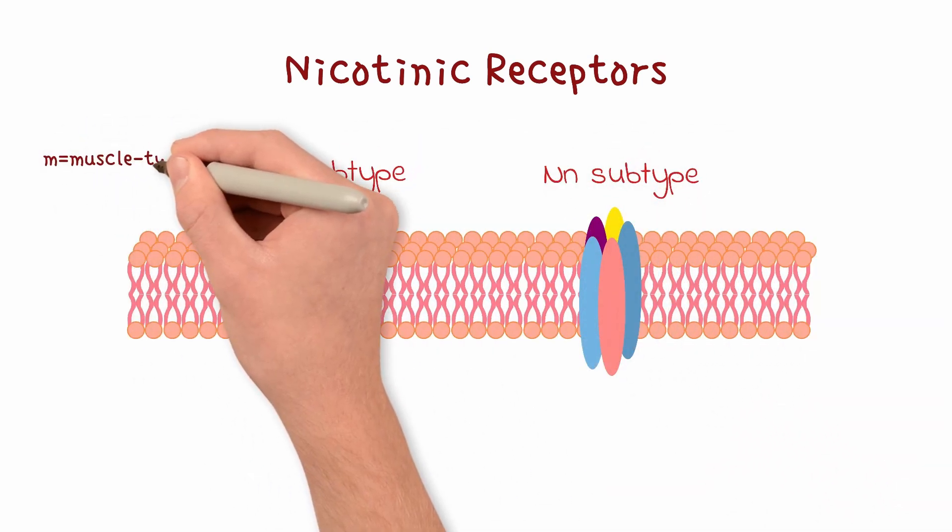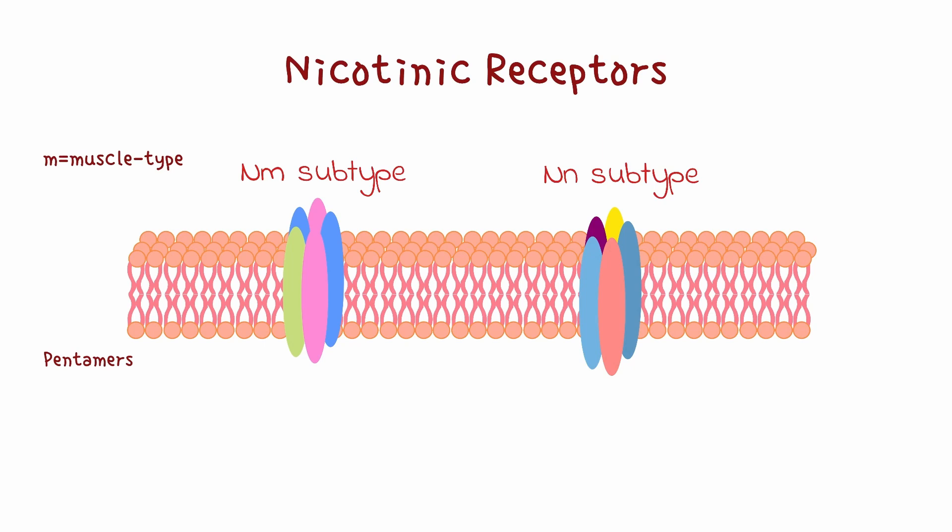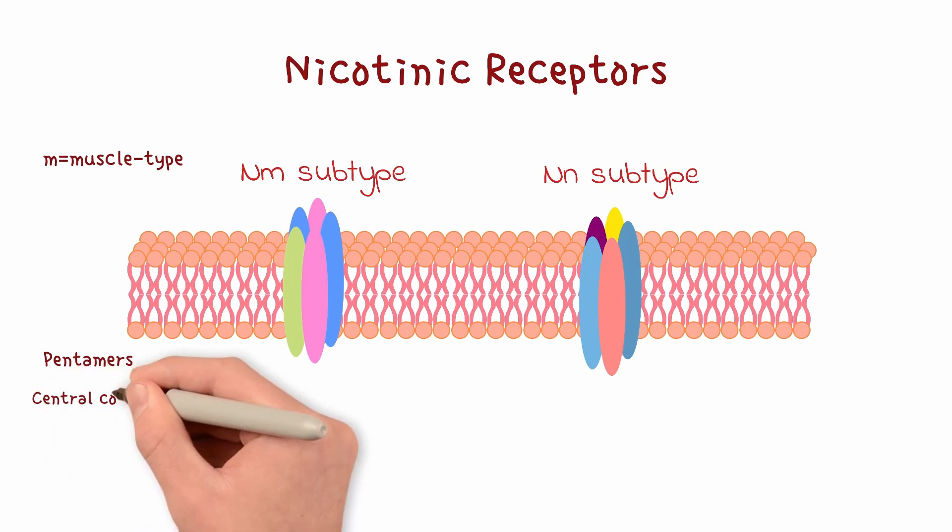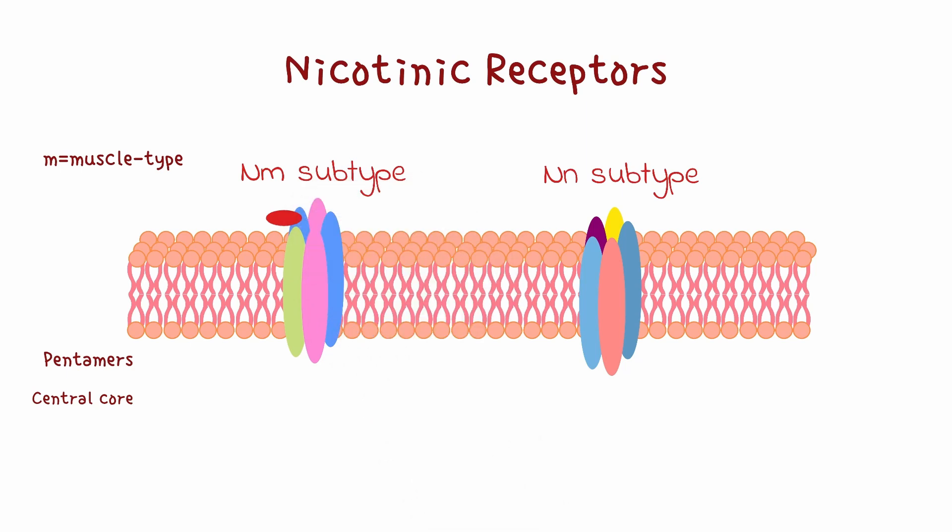This subscript M is for muscle type. Structurally, they are pentamers, five subunits arranged around the central pore. When acetylcholine binds, the pore opens immediately. Sodium rushes in, the cell depolarizes, the muscle contracts.